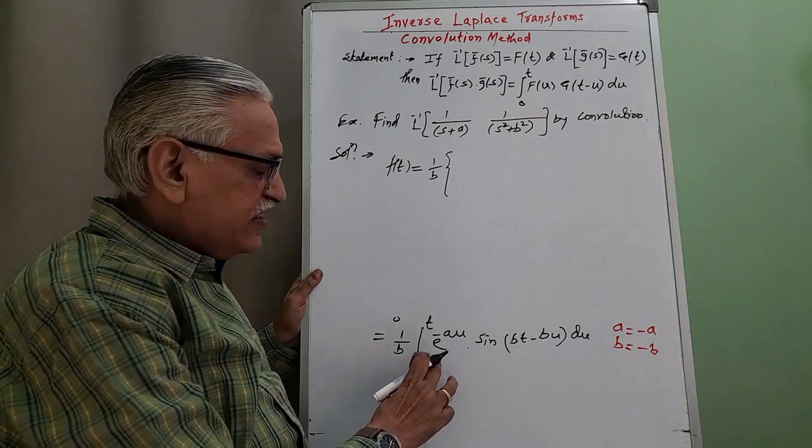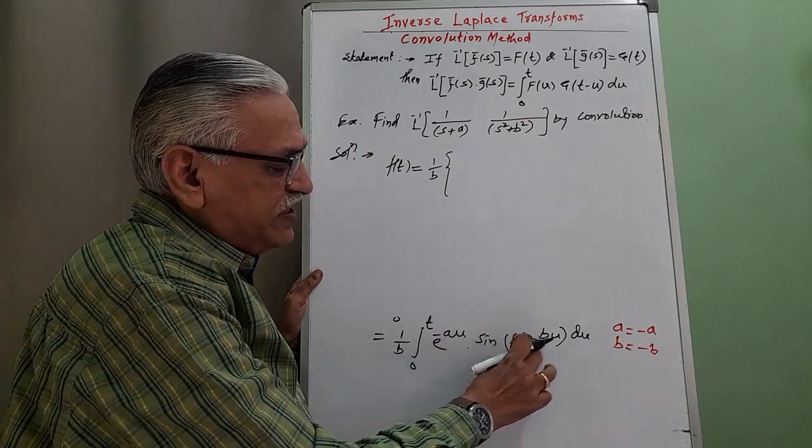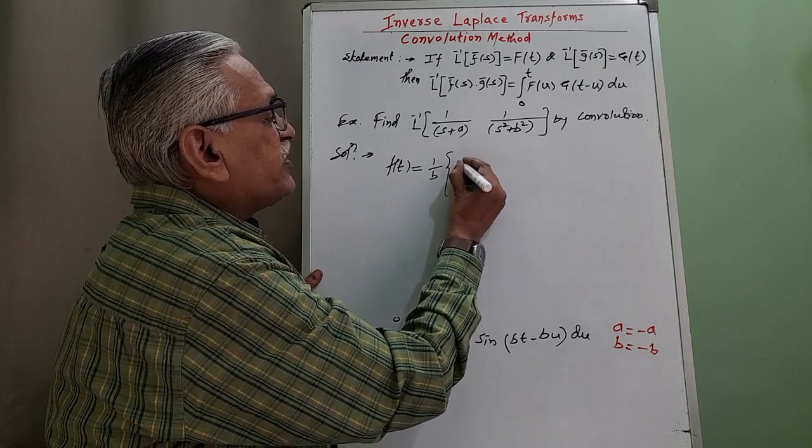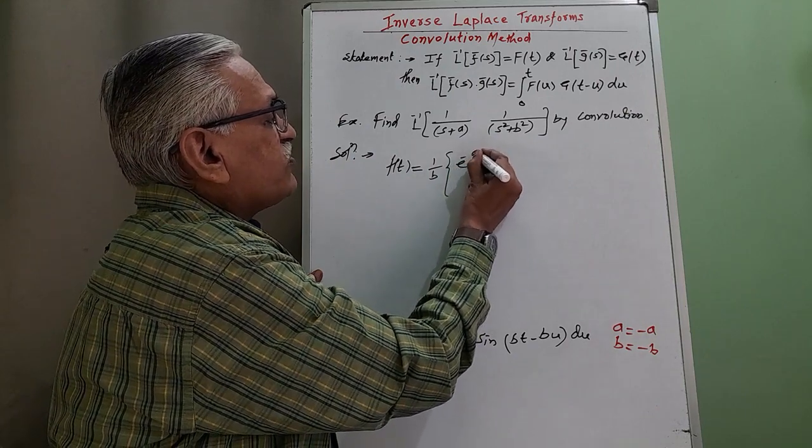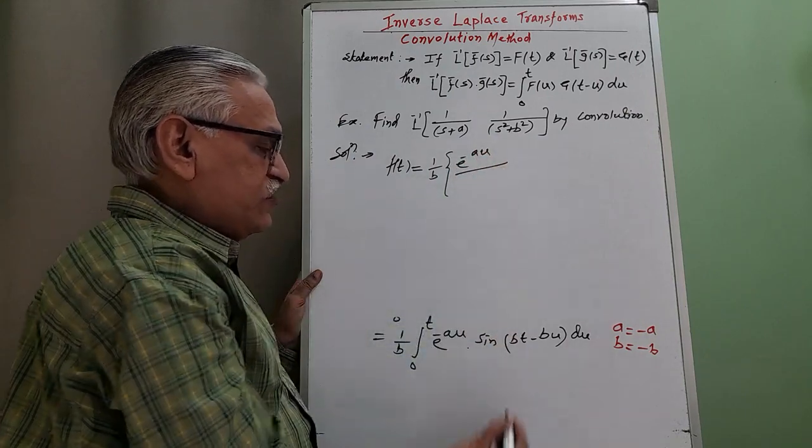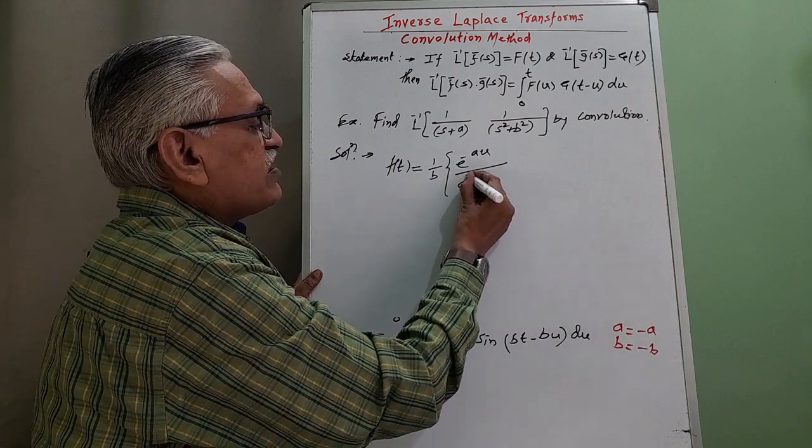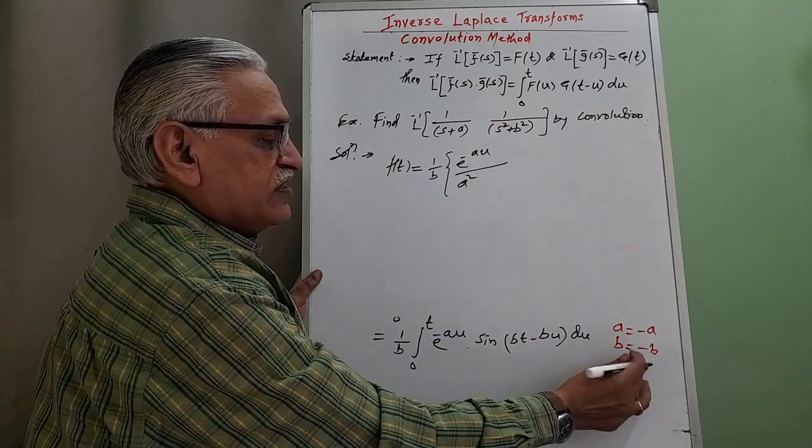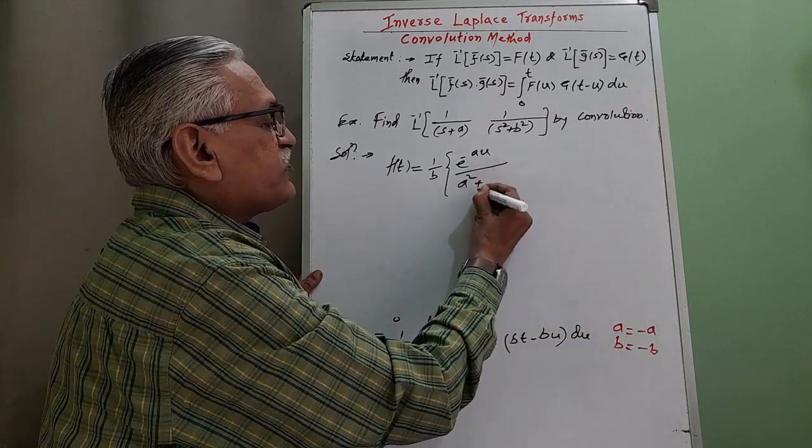Applying standard result, integration of e raised to x sin of bx plus c as e raised to minus au divided by a square plus b square, a square plus b square.